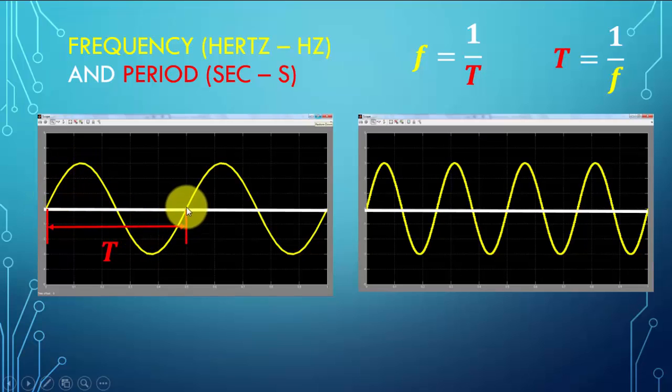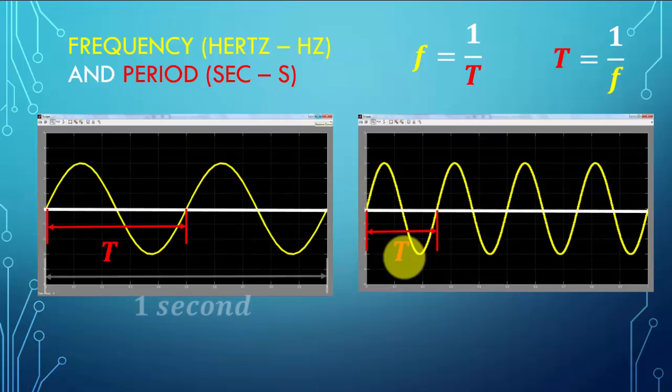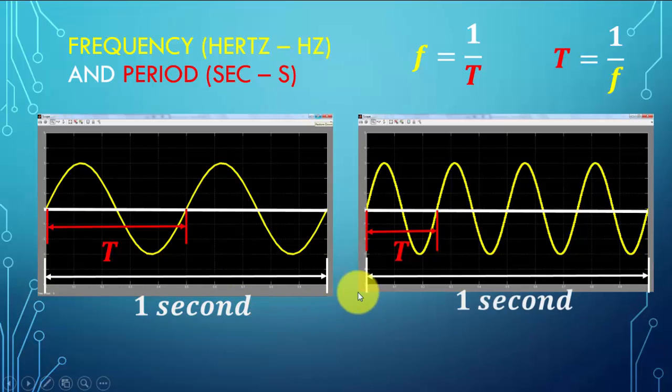You can take a look at the peak here and the peak here, and it should be the same period. Again, we have four cycles, and one cycle is shown here. Hence, the period of this cycle is T. As an example, this is for one second for each case.